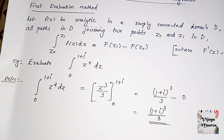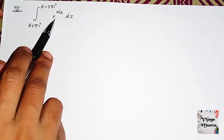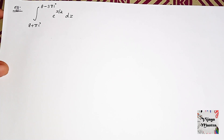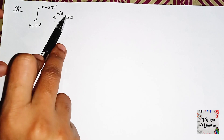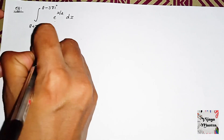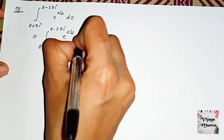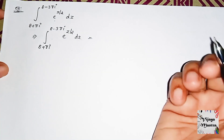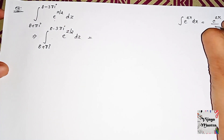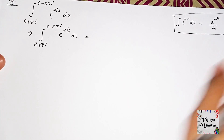Let's do another question. The next question is the integral from (8+πi) to (8−3πi) of e^(z/2) dz. That integral of e^(z/2) dz equals — we integrate e^(z/2).